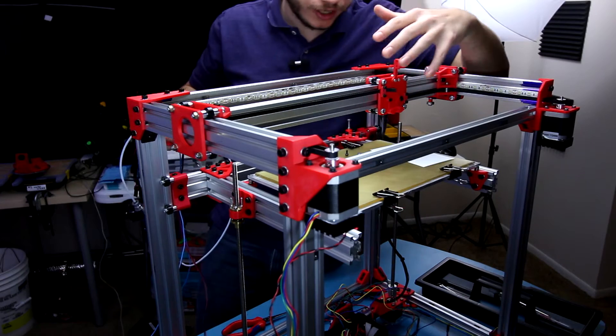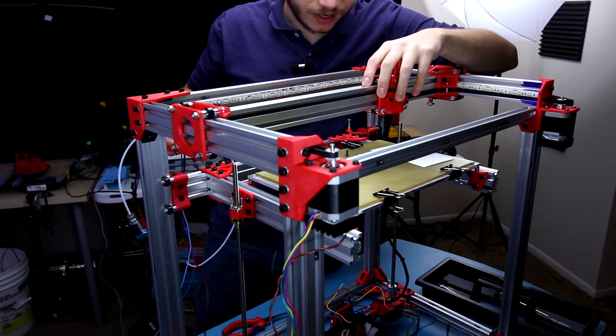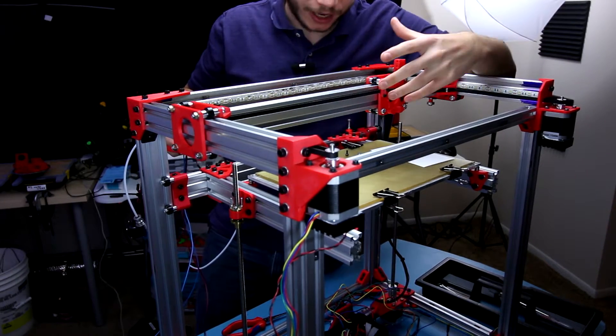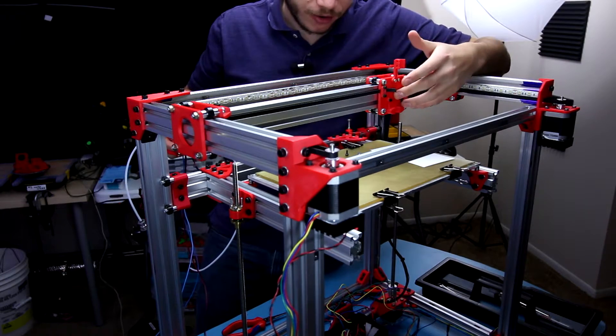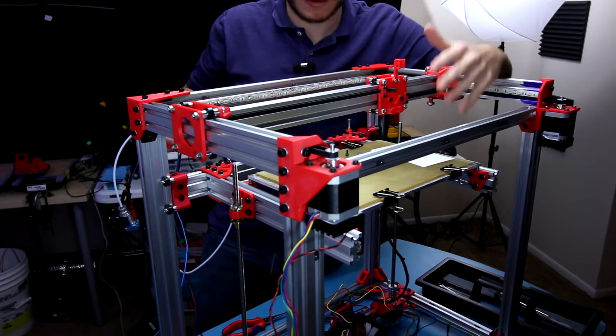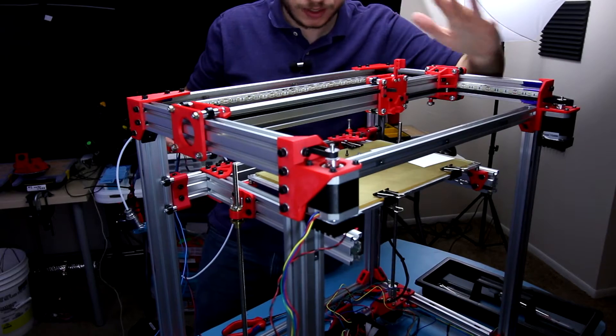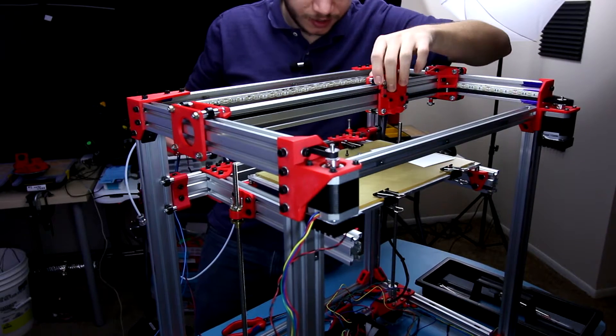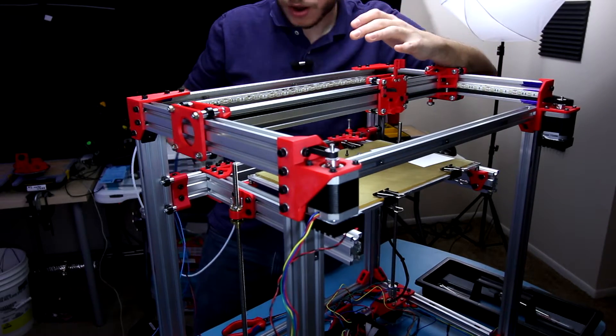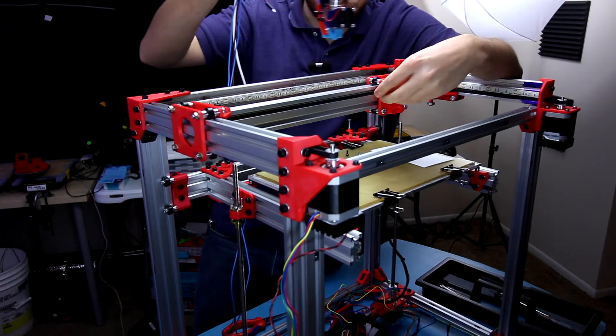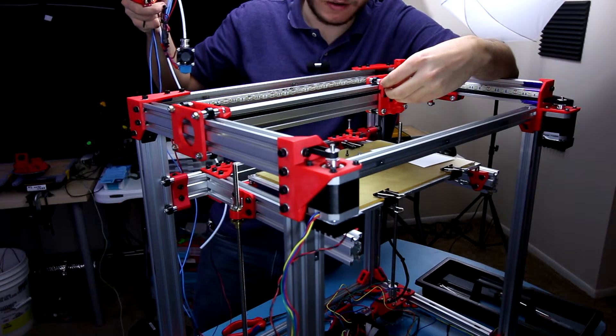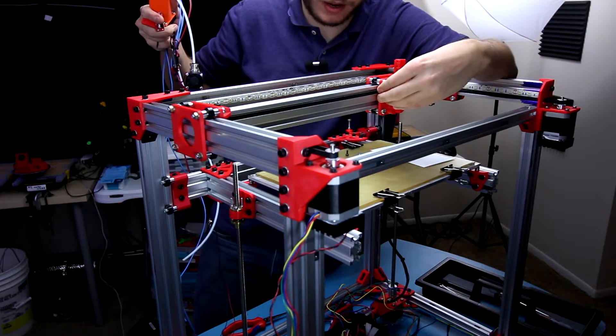Now ultimately I will need to disassemble this base here in order to transition to the new direct drive extruder mount, but I'm going to wait on that because I want to make sure everything is going to fit together before I disassemble this and go through all the trouble. I'll make sure all of this stuff fits to the new plate first, and then if it works I'll go ahead and rip this thing apart.